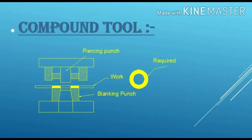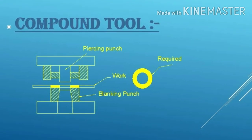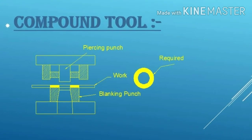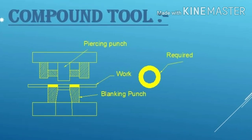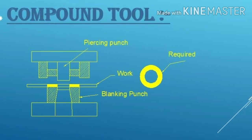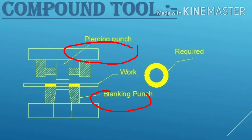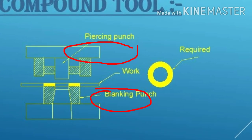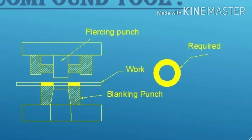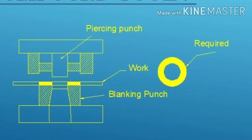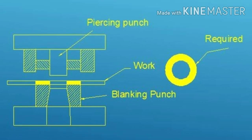Now we are going to see the compound tool. Blanking and piercing — both operations performed in a single stroke — that tool is called the compound tool. You can see in the image the piercing punch and the blanking punch. In one stroke, we are getting the required shape, so the construction of this tool is a little bit complex.